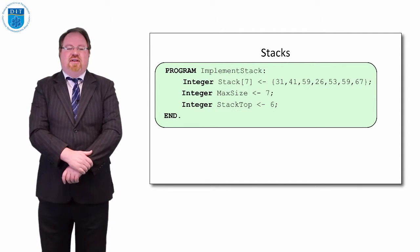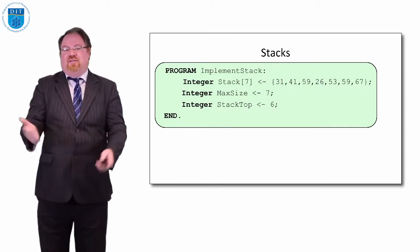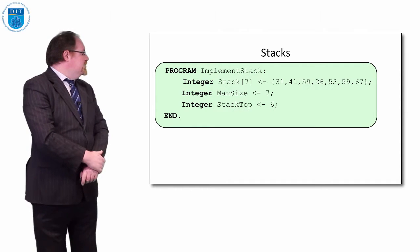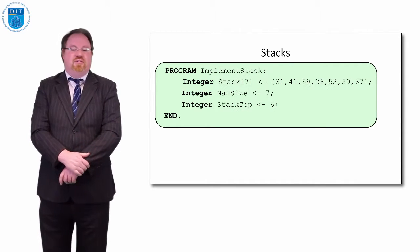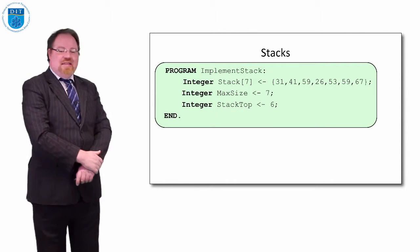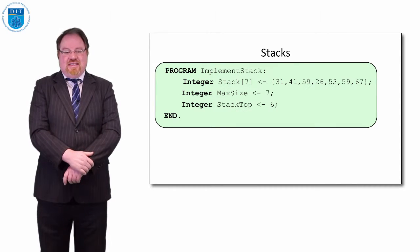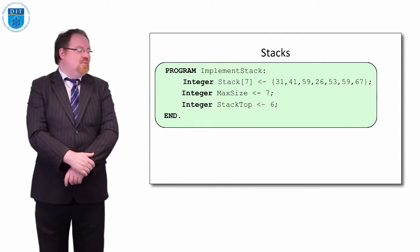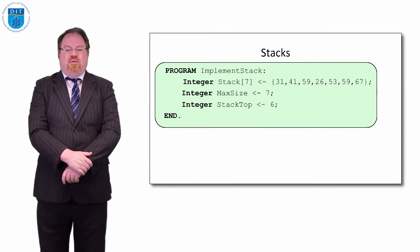Our basic declaration is as follows. We have a program called implement stack. For our examples here we're going to use integer types, but we can have a stack of real numbers, letters, strings, or booleans. In this case we have an integer stack of size seven, and we're going to populate the stack and make it full — so it has the values 31, 41, 59, 26, 53, 59, and 67 already in the stack. Because the length of the array is seven, the max size is seven, but the top pointer, because it's full, is pointing to element number six, which is the seventh element. So we've declared a stack that's full — we can't push any more elements onto the stack, we can only pop. Once we pop, we can overwrite the values and push new values on.